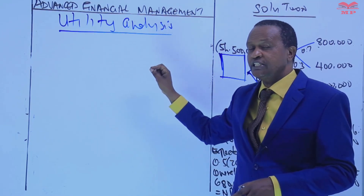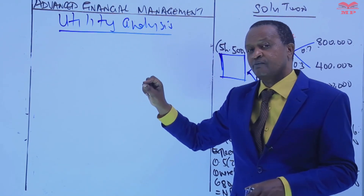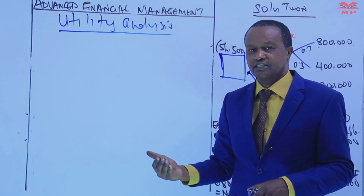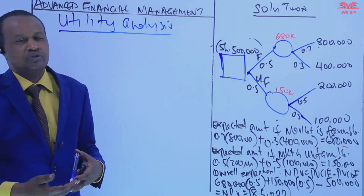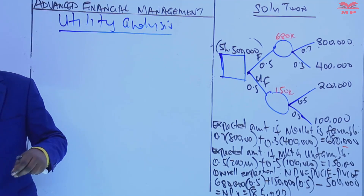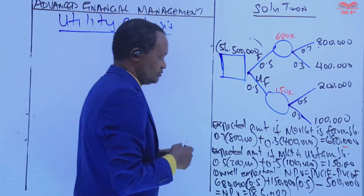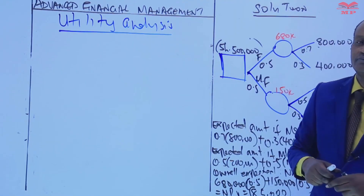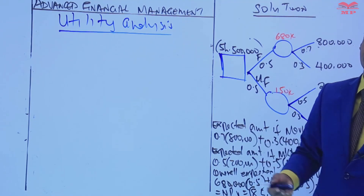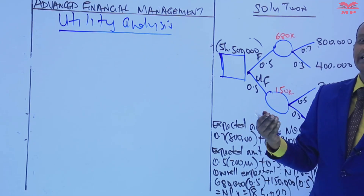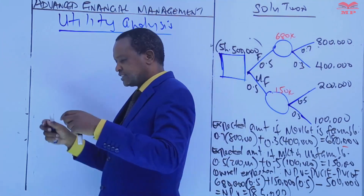Utility analysis — the word rings a bell, like utiles in economics. In capital budgeting, utility analysis is a decision-making technique that helps evaluate and compare different options or alternatives based on multiple criteria. It is a technique we use to evaluate and compare different options or decisions or alternatives using multiple criteria, and it is particularly useful when the outcomes or benefits cannot be quantified.